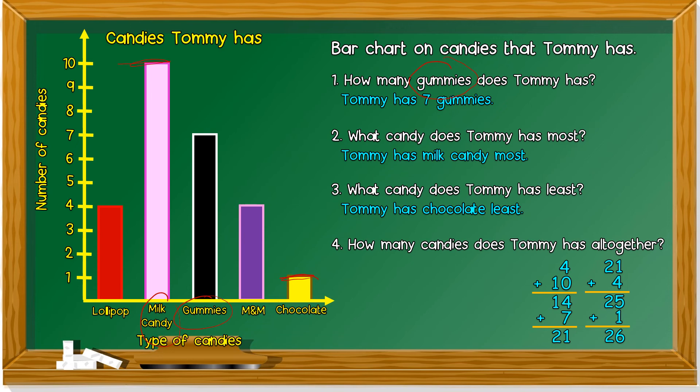Let's check again. Okay, lollipop, four. Milk candy, 10. Gummies, seven. M&M, four. Chocolate, last one, one. So, Tommy has 26 candies all together.